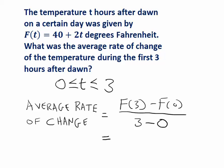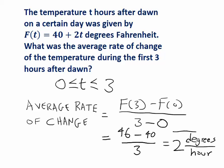f(3) is 46. f(0) is 40. And you can see that this is going to simplify to 46 minus 40 is 6, divided by 3 is 2. But this problem had units. The numerator of our fraction was telling us the temperature in degrees. The denominator was telling us how much time had passed in hours. Therefore, this quantity, this rate of change, has units of degrees per hour. And if you think about it, this makes sense. Based on the formula we were given, it makes sense that the temperature was increasing at an average rate of 2 degrees per hour. In fact, according to this formula, it was increasing at a constant rate of 2 degrees per hour.